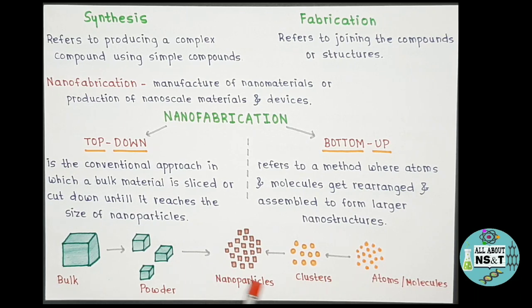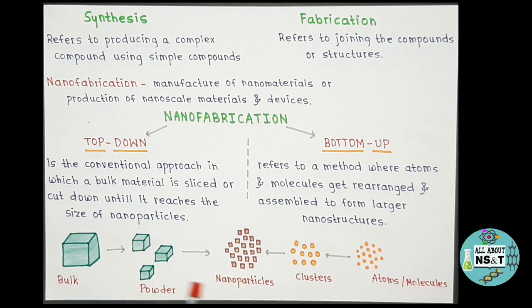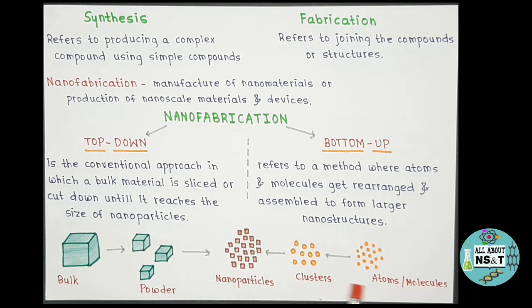As you can see in this picture, this is a bulk material. If you want to convert this bulk material into nanoparticles, you have to cut it into smaller parts until you gain the size of nanoparticles — this is the top-down approach, going from bigger to smaller. The bottom-up is exactly the opposite: you start with atoms and molecules, rearrange and reassemble them to get larger nanoparticles, going from smaller to larger. With this diagram, you should now understand what top-down and bottom-up approaches are.